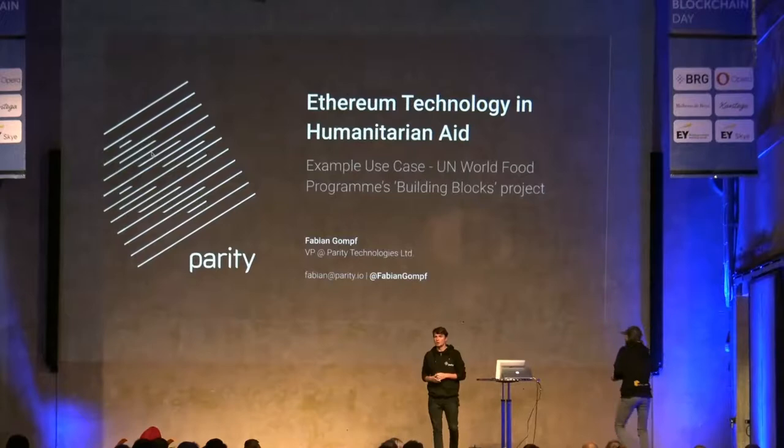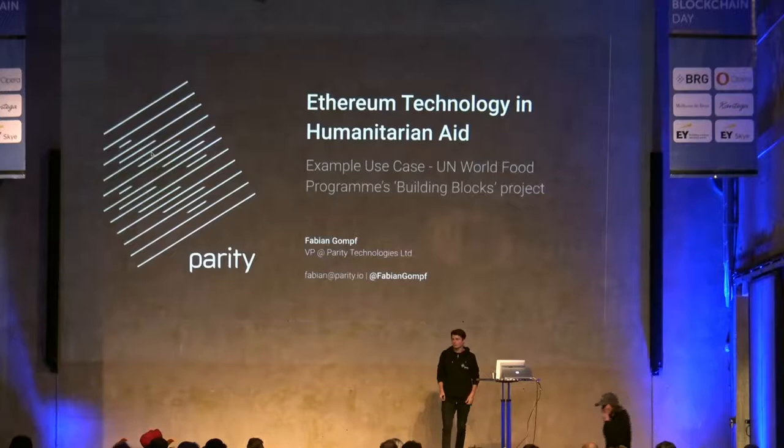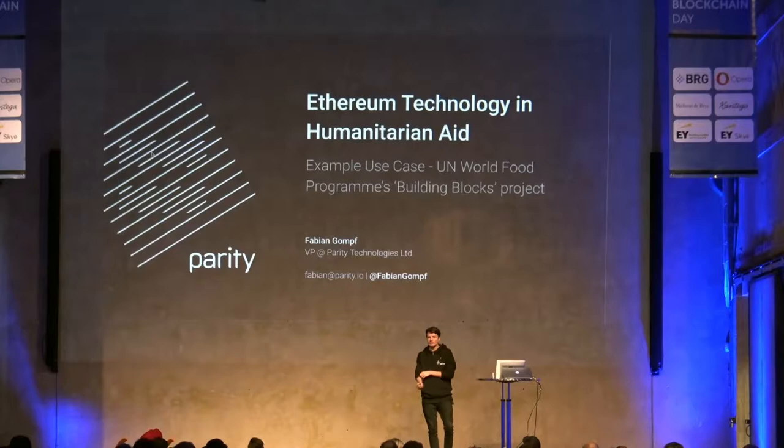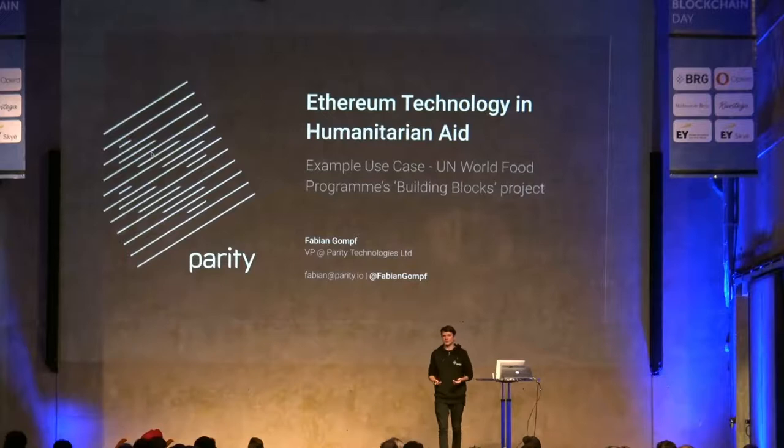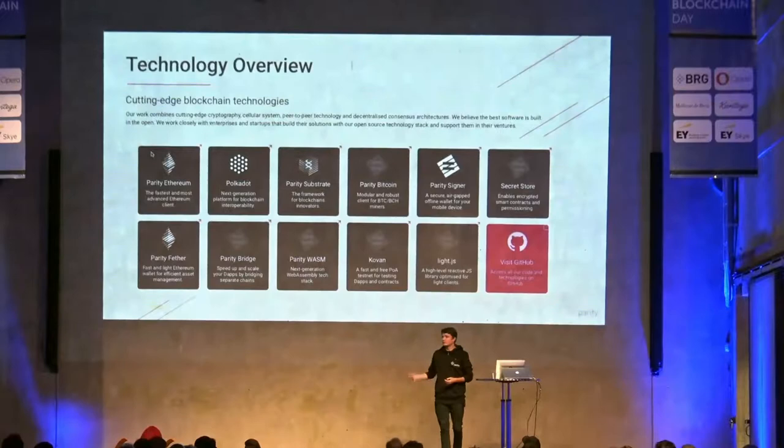I'm not from the United Nations World Food Program. I'm from Parity Technologies — we are a core blockchain technology company. We're about 80 people, mostly in Europe with our headquarters in Berlin. We mostly build the actual software that underpins blockchains — the cryptography, distributed systems, and so on behind those technologies. But we sometimes also help teams that build on our technology stack, and this is one of those examples.